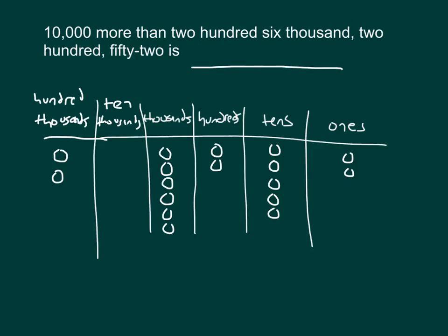So what I did first was model 206,252 in my place value chart. In this case, I am adding 10,000 more, so this is going to be the sum of what I have in my chart and 10,000 more. I'll go ahead and place a place value disk for the 10,000 more.